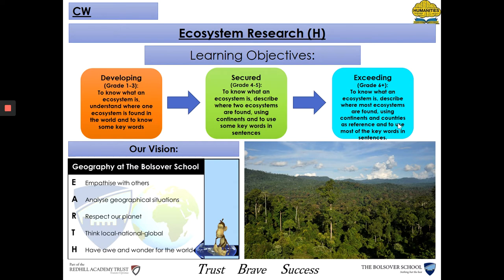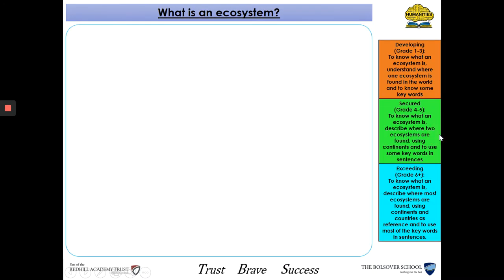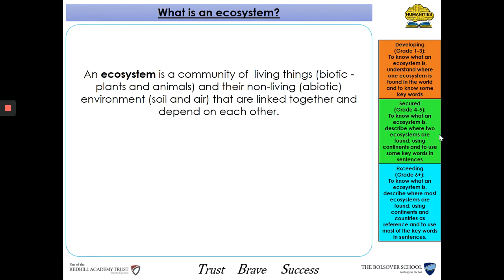Let's start today's lesson. So what is an ecosystem? An ecosystem is a community of living things. A key word we use is biotic, and this means any plant or animal. And then non-living, so abiotic environments — this would include the soil, the sunshine and the air. And they're all linked together and depend on each other.